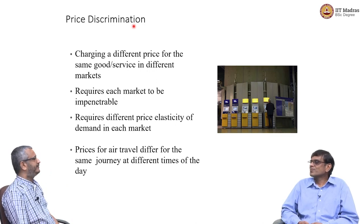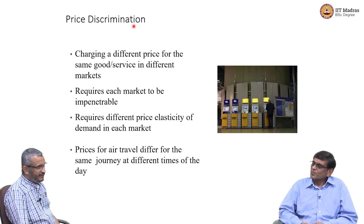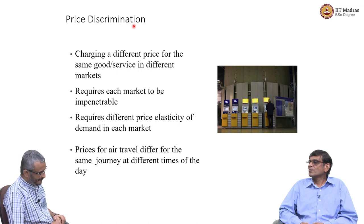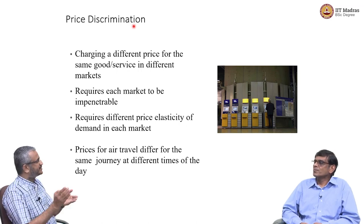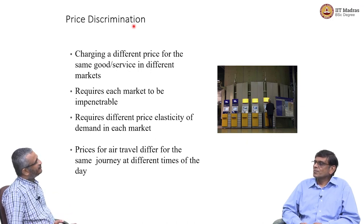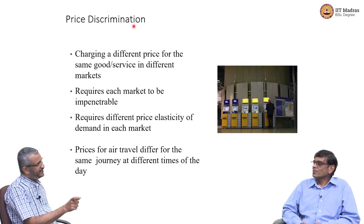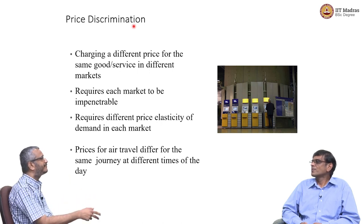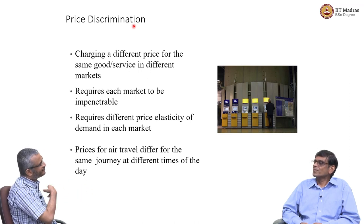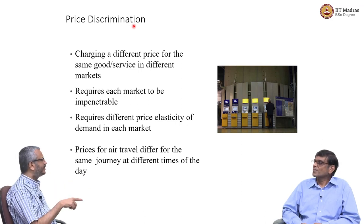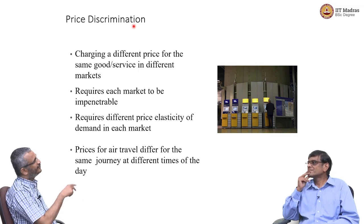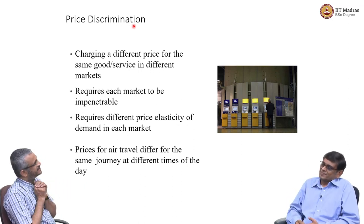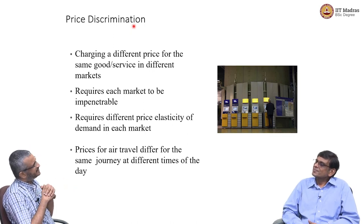Price discrimination is a very important and interesting strategy. Peak pricing is a variant: in metro travel during peak hours of 8 to 10 AM, if you are buying a ticket from the counter without a season pass, you pay more. Large numbers of office goers at that time means your travel is urgent and you are willing to pay more. Peak and off-peak pricing is especially used in electricity pricing and utilities.